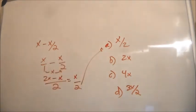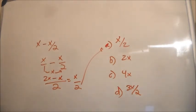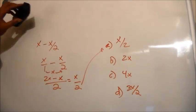So that was questions 7 and 8. Question 7 is 5X over 4, answer C, and question 8 is X over 2, answer A. We'll be back with question number 9. Thanks for watching — this is Keno Thomas.